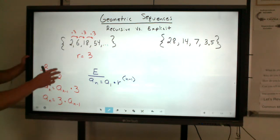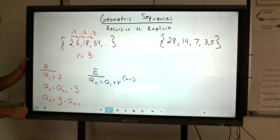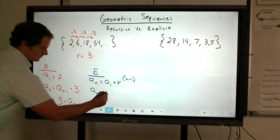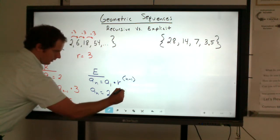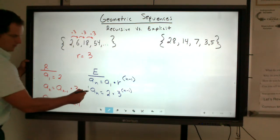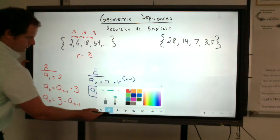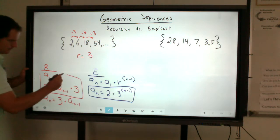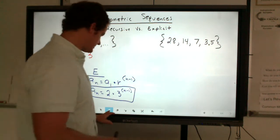So if we were to finalize this geometric sequence using the explicit formula, we would say that a sub n is equal to our first term, which is 2, multiplied by our common ratio, which in this case is 3, all raised to the n minus 1 of that previous term. So explicit, and then obviously for recursive, I prefer this one. Some other teachers may have you write the bottom one, but both of those are fine.